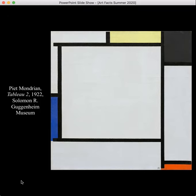Hello all, Dr. Jeanette Neiswinner here with a quick art fact about shapes. So we talked about lines and contour lines, and you can see we have many contour lines in this Mondrian painting, but here those contour lines, those thick black lines, are making up geometric shapes.